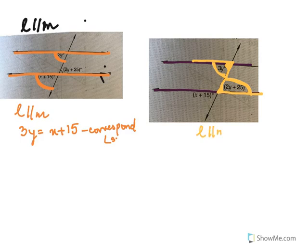Here we have L parallel to M and we'll have 3y equal to 2y plus 25, and the reason for this is alternate angles.